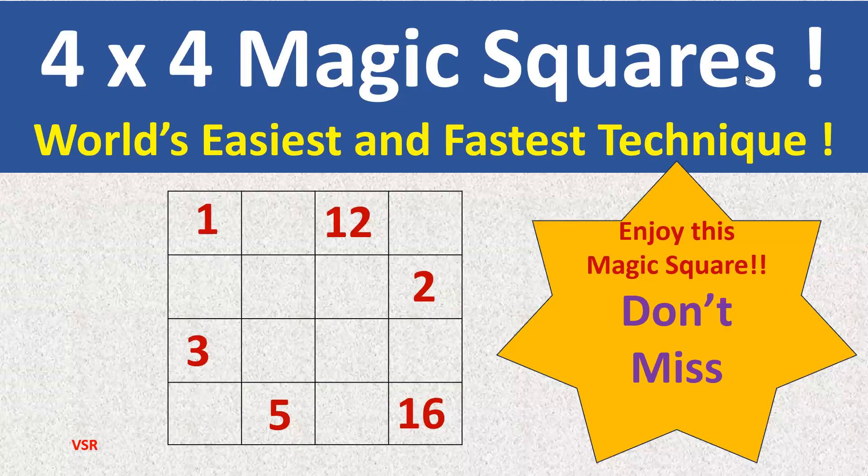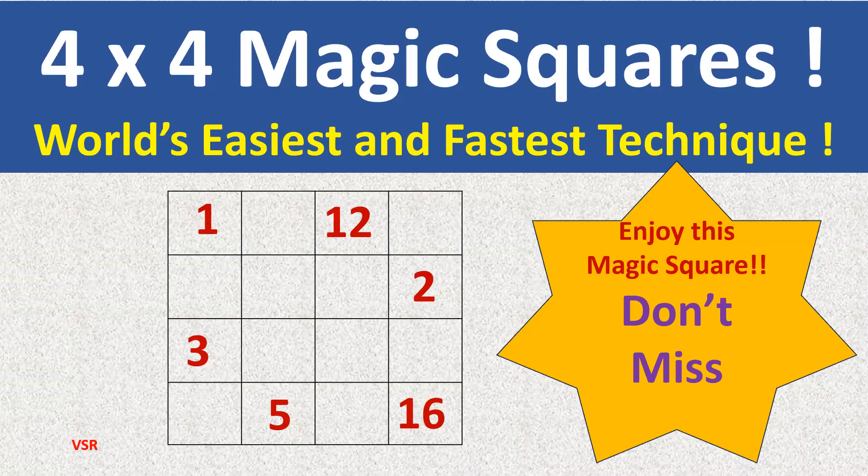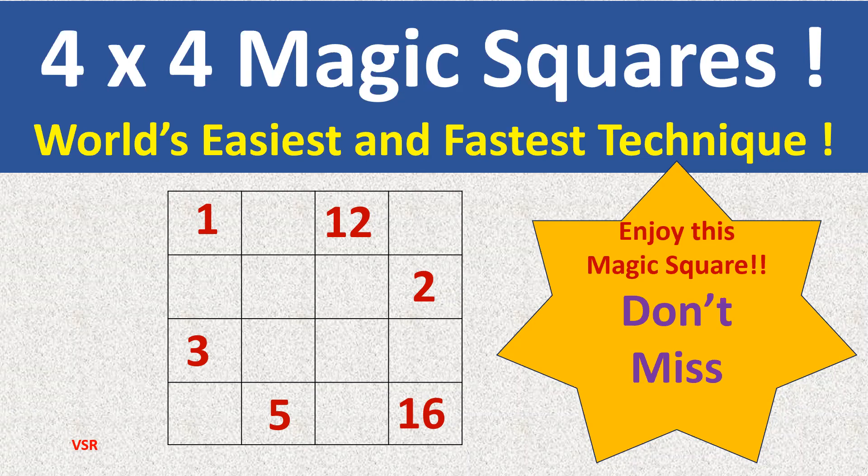Hi, in our previous videos, we discussed how to create magic squares of odd numbers of squares, like 3 by 3, 5 by 5, 7 by 7. If you have not yet watched those videos, the links are given just below in the description. Please go back and enjoy those odd number of magic squares also.